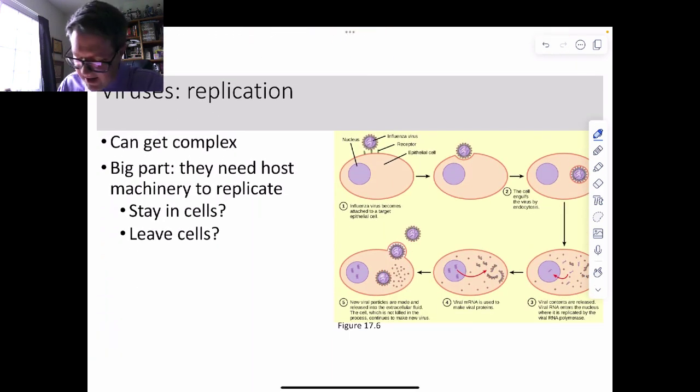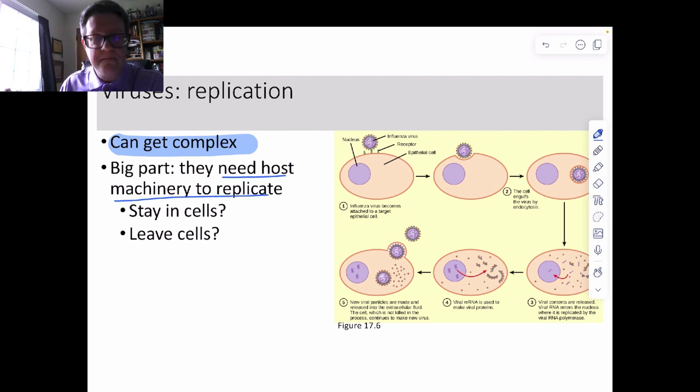When they replicate, it kind of does get a little bit complicated, and there's no point in pretending. One thing that seems to be always required is they require host machinery, meaning they need the host's parts for them to replicate. What they then have is, once they break in, they have to make a decision. Do they either stay inside the cells when they replicate, or do they replicate and leave?